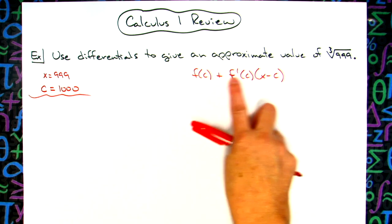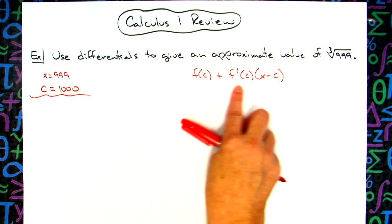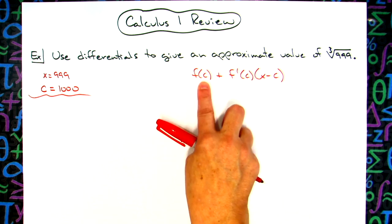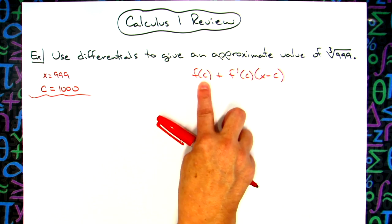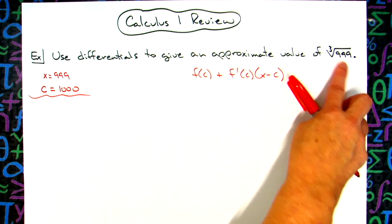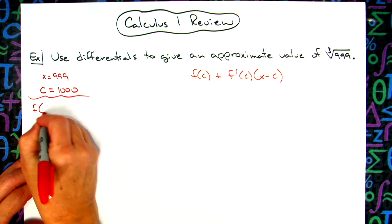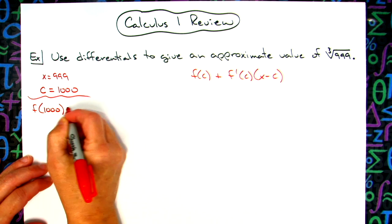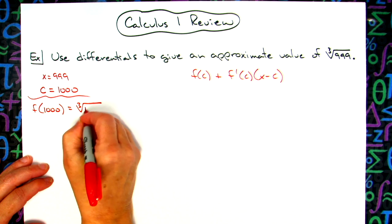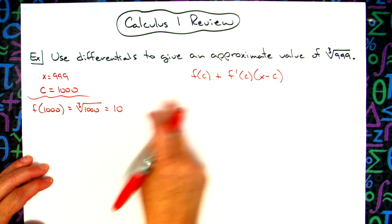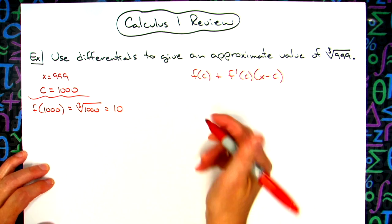Now I just basically have to go through and figure out each of these pieces and parts, put them together, add them up, and I will have my approximation. So I need to be able to do f of c. Well, if my function is the cube root there, so then f of c would be f of 1,000, which is the cube root of 1,000, and that's going to just give me a 10. So that's going to be the value that we're going to replace for f of c there.